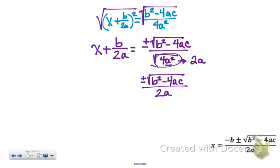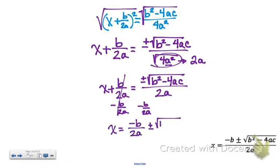Here, and now I have x + b/2a equal to this amount. Well, now I can subtract b/2a on both sides. And so x is going to equal the opposite of b/2a plus or minus the square root of b² - 4ac all over 2a.